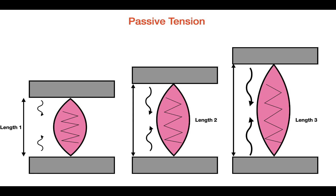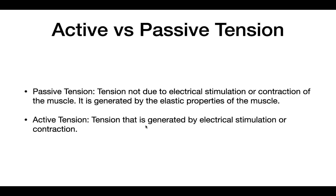This recoil force that the muscle experiences when it's stretched out is the passive tension. As we increase the length of the muscle, we increase the recoil force, and as we increase the recoil force, we increase the passive tension. So passive tension is going to increase as the length of the muscle increases. Passive tension is tension not due to electrical stimulation or contraction of the muscle — it is generated by the elastic properties of the muscle. As you stretch out a muscle further, the passive tension is going to increase.